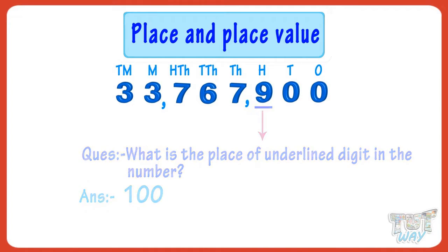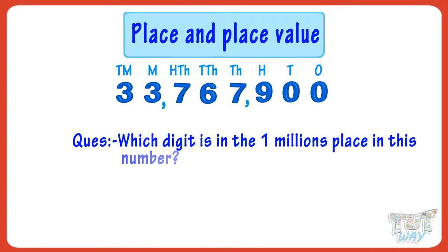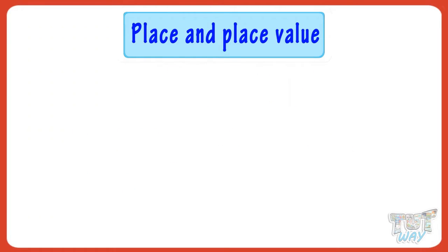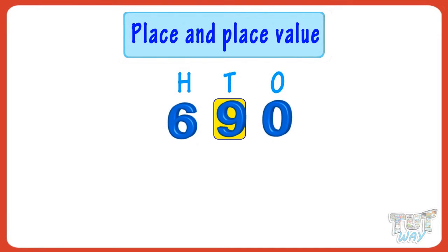What is the place of the underlined digit in the number? It is one hundred. Which digit is in the one millions place in this number? Three is in the one millions place. Which digit is in the one thousands place in this number? Seven is in the one thousands place.